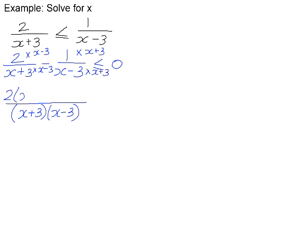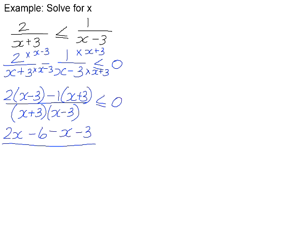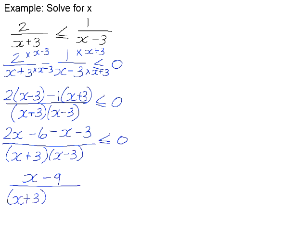That will give us 2(x minus 3) minus 1 times (x plus 3). If we multiply out and simplify, we're left with 2x minus 6 minus x minus 3. I'm going to leave my denominator factorized because it will be easier to see what my critical values are. And if we simplify the numerator, we get (x minus 9) over (x plus 3)(x minus 3), which is all smaller than or equal to zero.